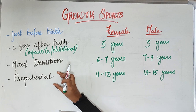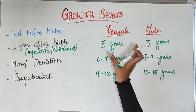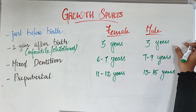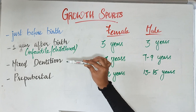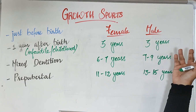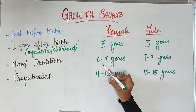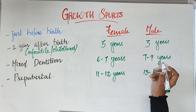The third one is the pre-pubertal growth spurt. The infantile growth spurt is the same for females and males — at around 3 years of age — because at this age there is no hormonal variation. The mixed dentition or juvenile growth spurt occurs at 6 to 7 years for females and 7 to 9 years for males.